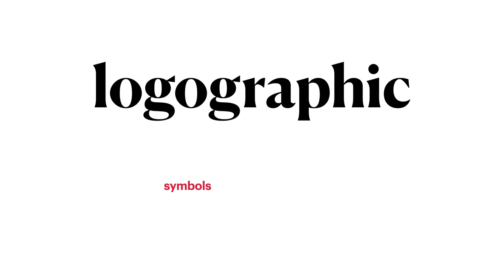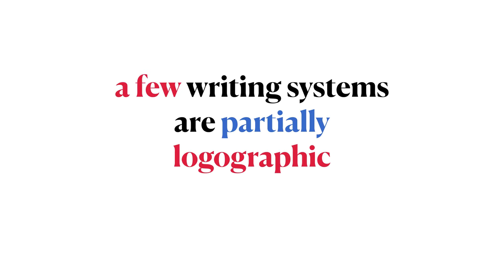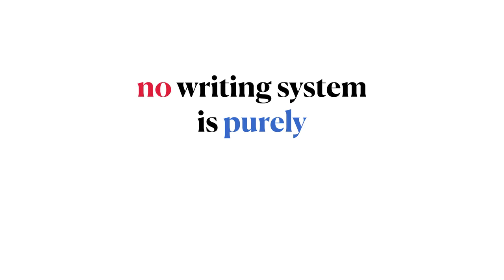An alternative principle is the logographic principle. In a writing system that is logographic in nature, the symbols represent morphemes. A purely logographic system would be one where symbols represent morphemes and sound information is not directly encoded. A few writing systems are partially logographic — Chinese is an example. However, no writing system is purely logographic; there is no writing system that encodes only morphemes without reference to sounds.